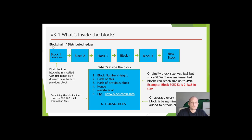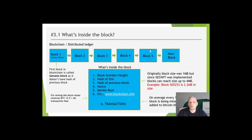Before we dive into lesson five, a short reminder: Bitcoin blockchain is not the same as a Bitcoin node, because nodes can include the Bitcoin blockchain but there can also be Bitcoin nodes on the network which don't include it. The blockchain is information about Bitcoin transactions — the very first block has the first transactions, and each block includes the hash of the previous block. The first block is called the genesis block because it has no previous block.